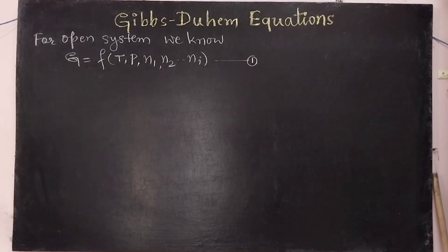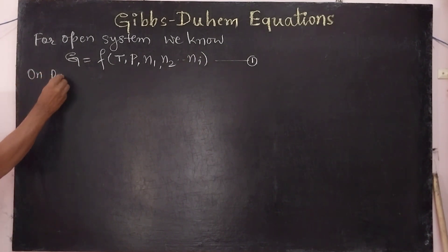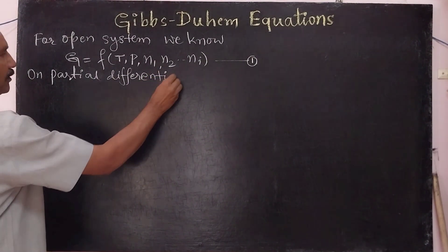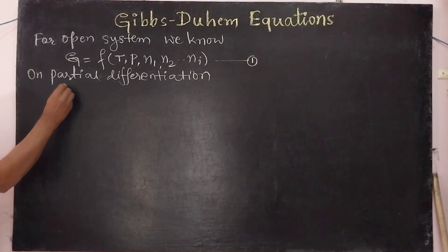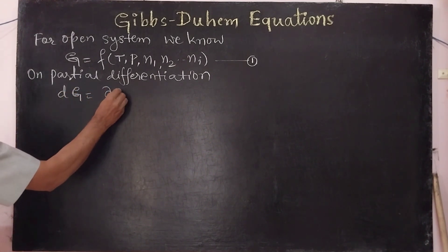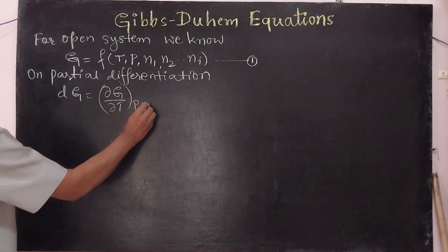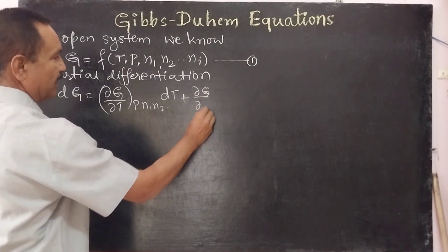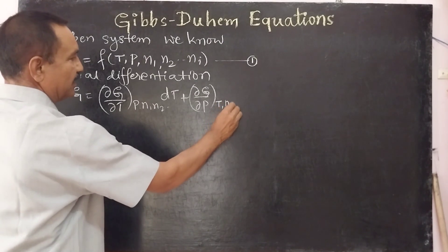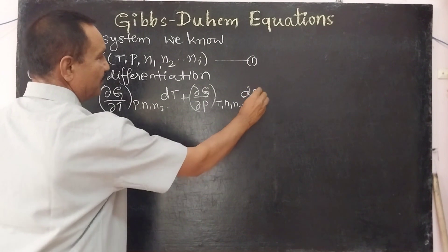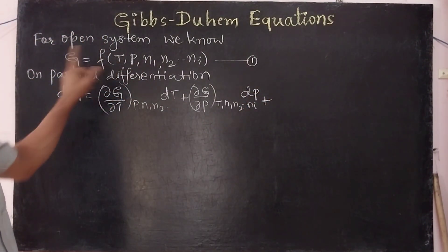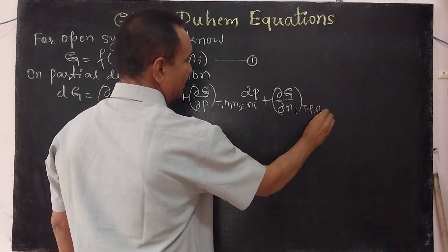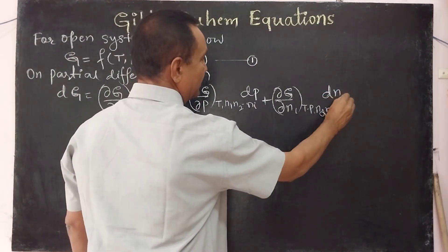On partial differentiation of equation 1, we get: dG is equal to (∂G/∂T) at constant pressure, N1, N2, etc., times dT, plus (∂G/∂P) at constant temperature, N1, N2, up to Ni, times dP, plus the differentiation with respect to component N1, that is (∂G/∂N1) at constant temperature, pressure, N2, N3, and so on, times dN1.